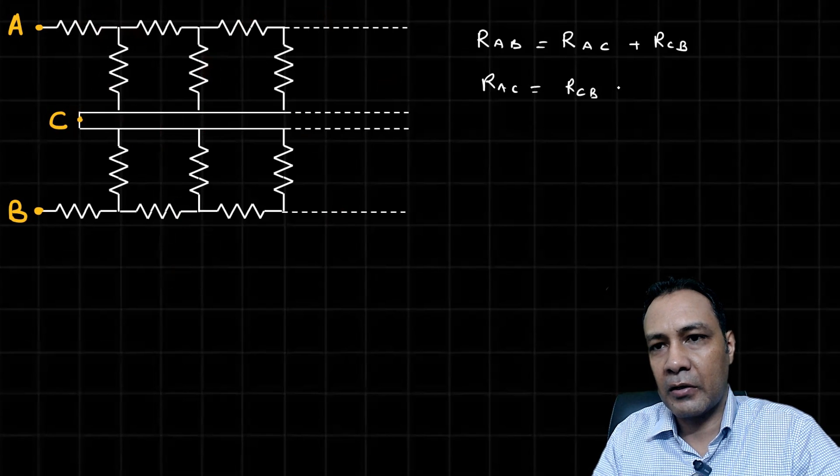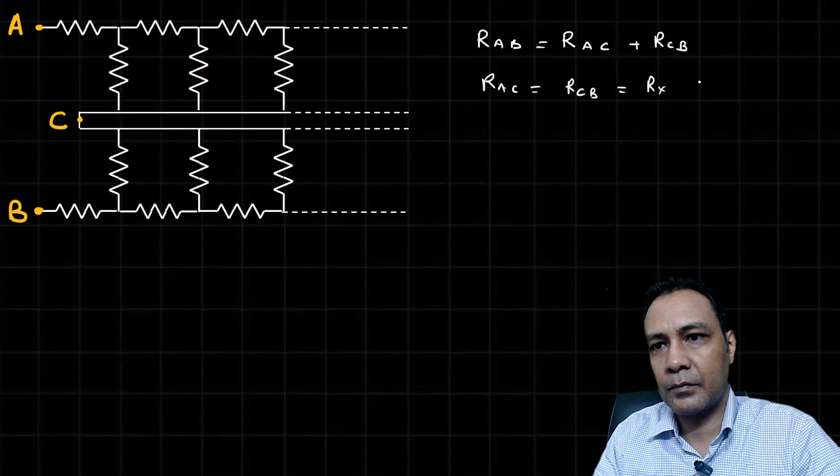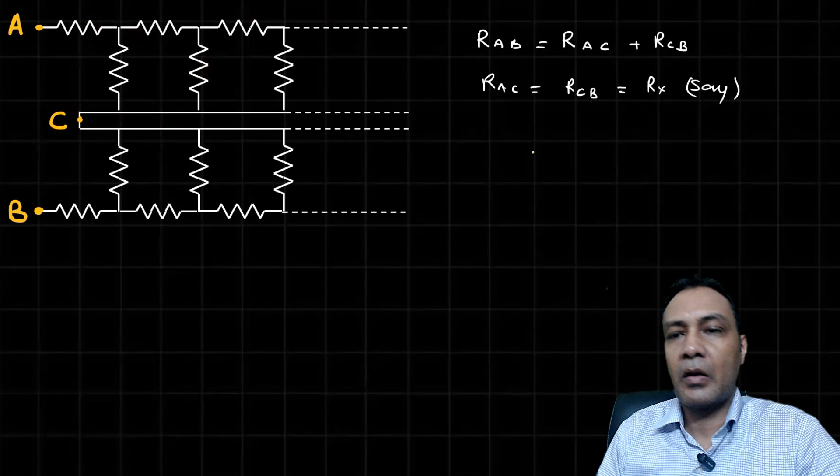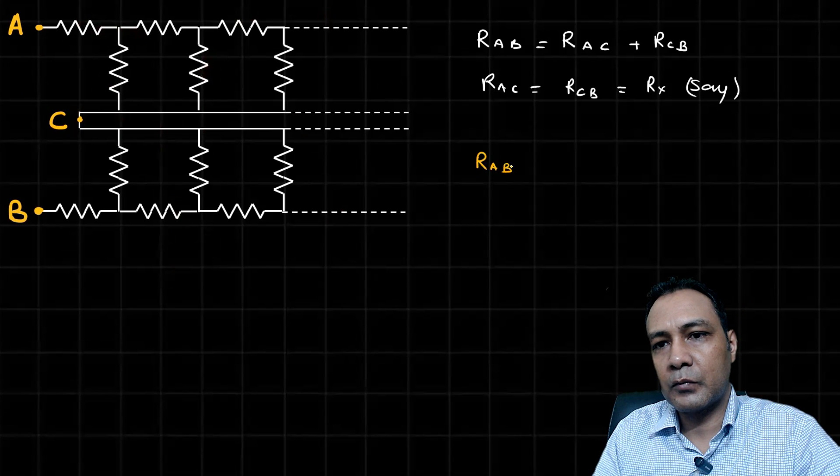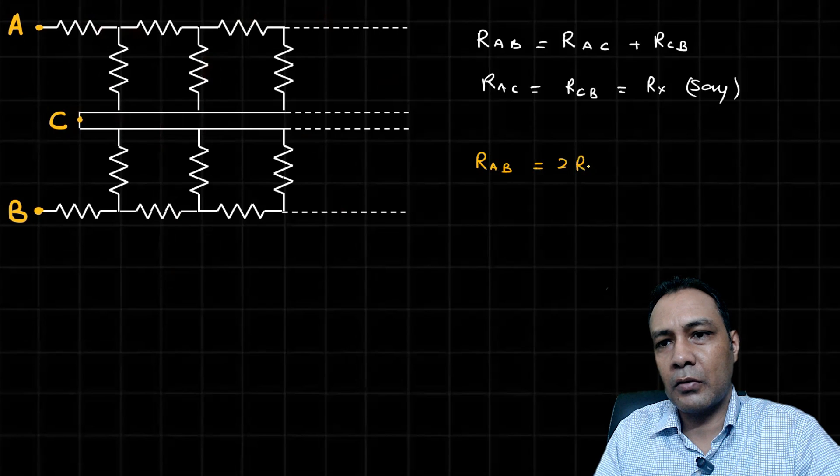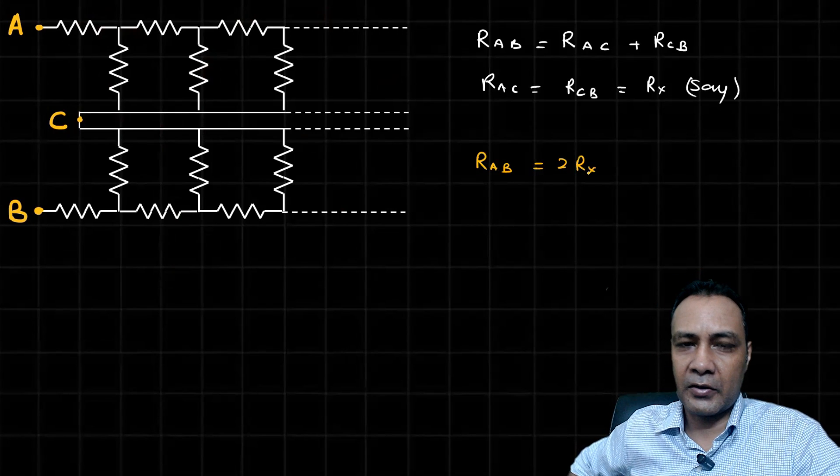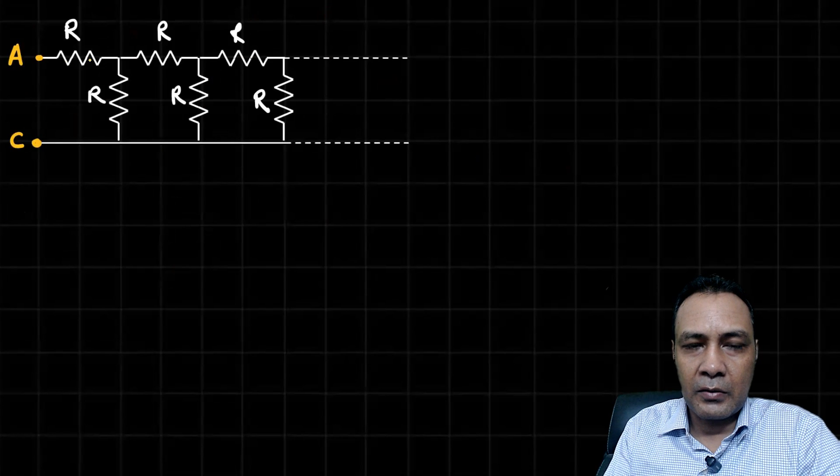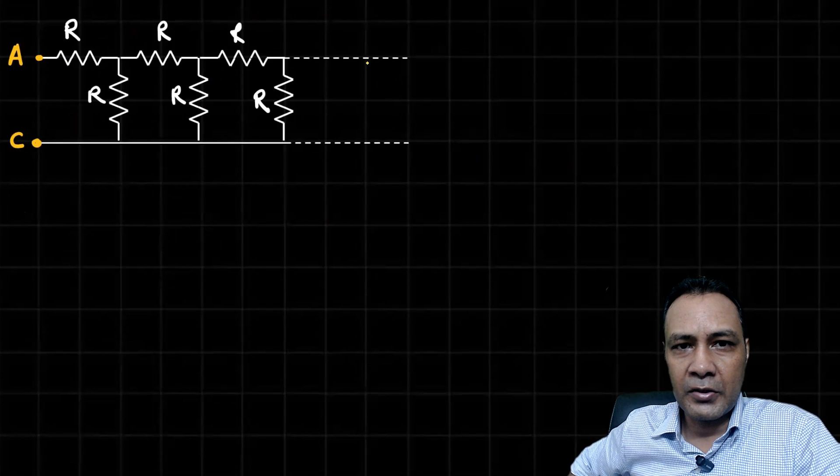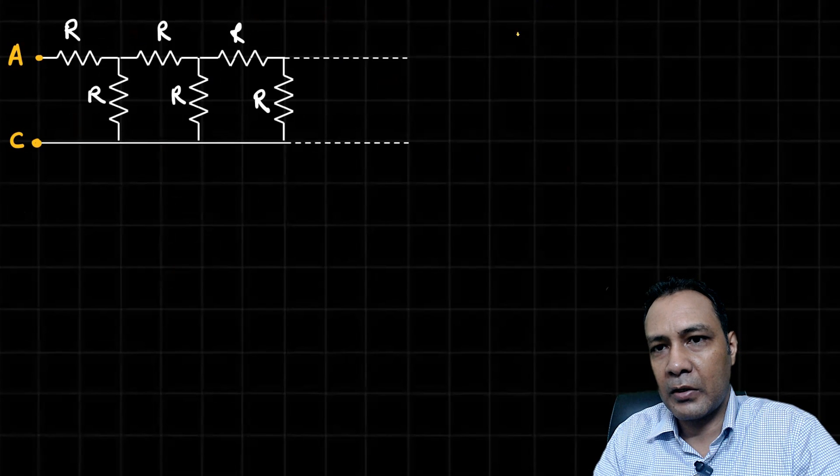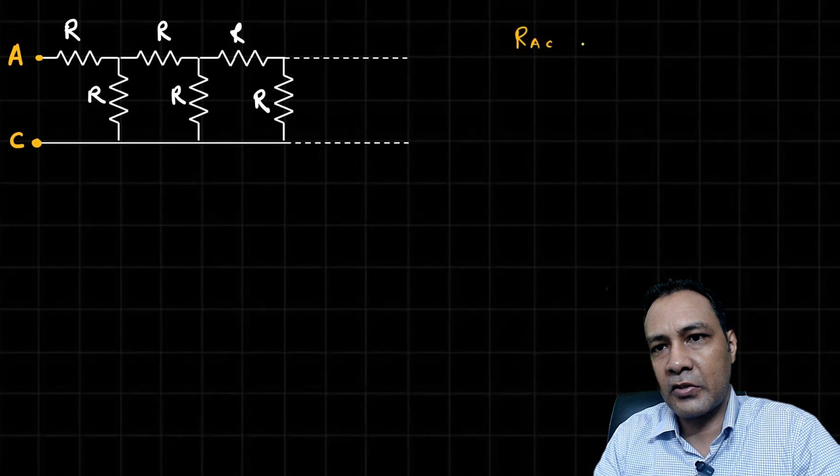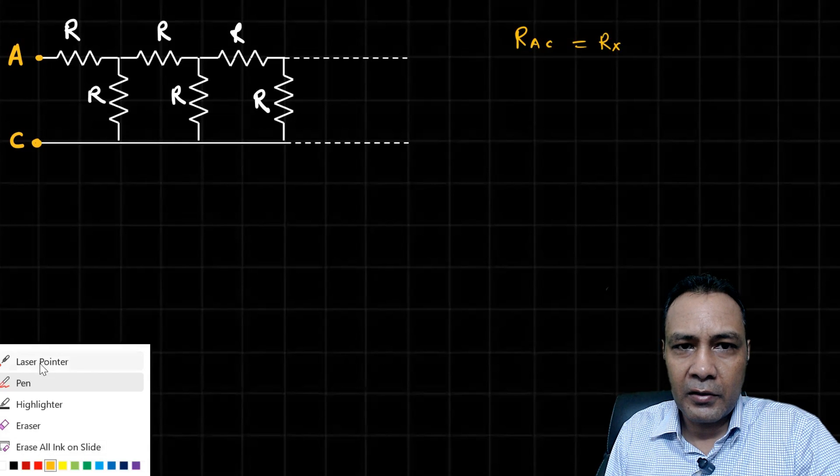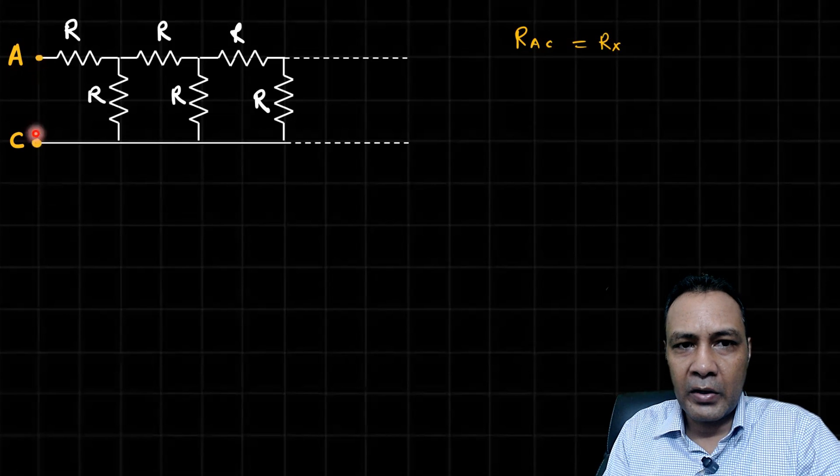This whole thing and this whole thing are identical. All resistors are same, so R_AC is equal to R_CB. Let me name that R_X. So R_AB will be basically 2R_X. I have to just find the value of R_X.